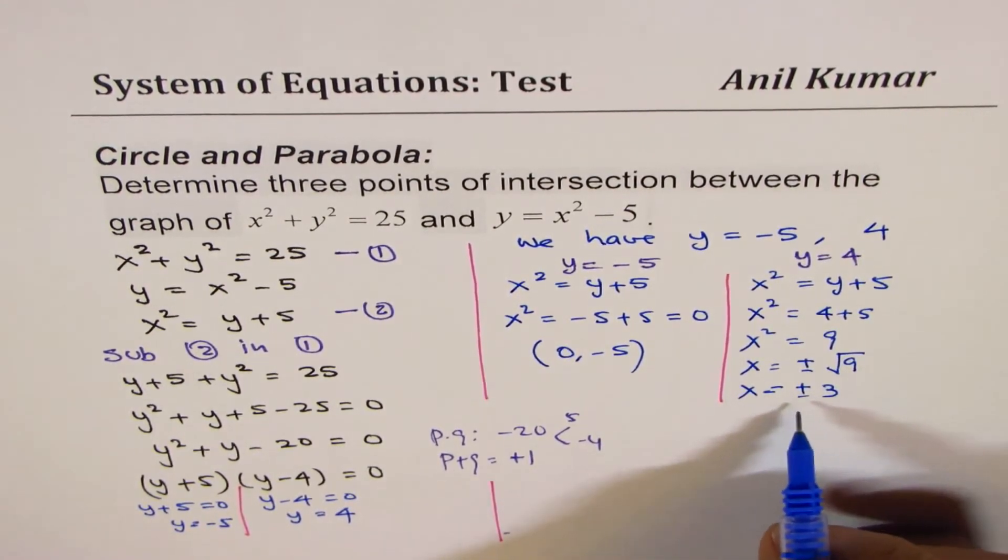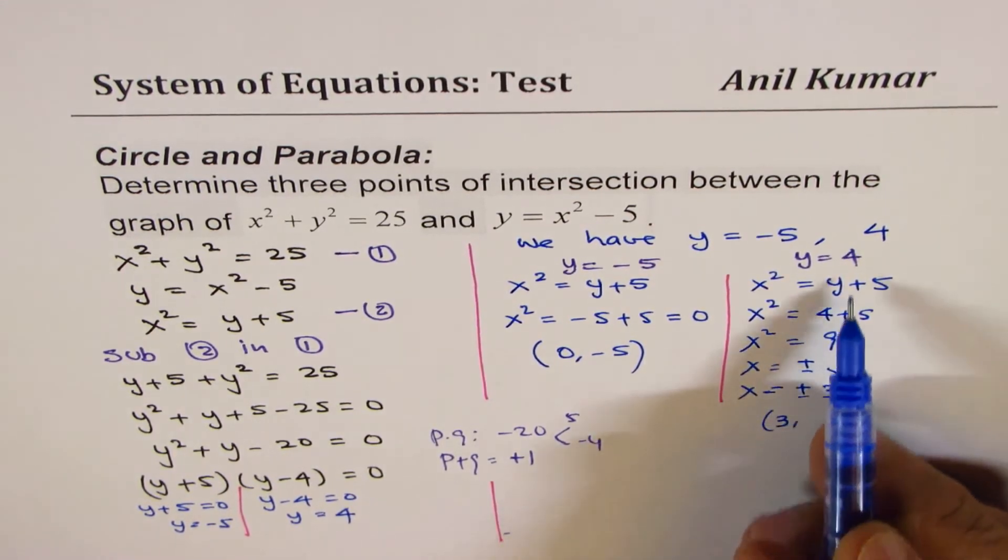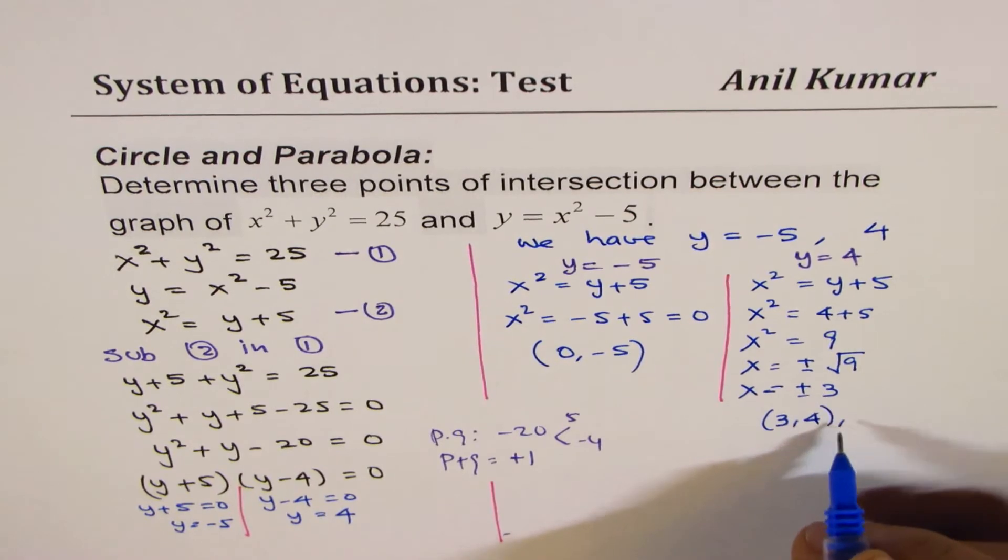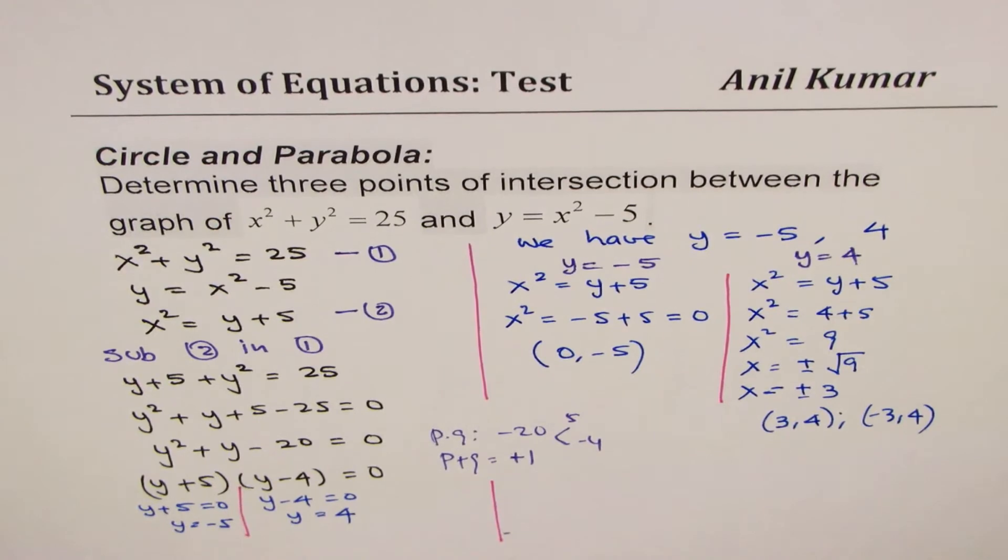And therefore, the coordinates of these points are 3 comma 4, or it could be minus 3 comma 4. So we have our solution.